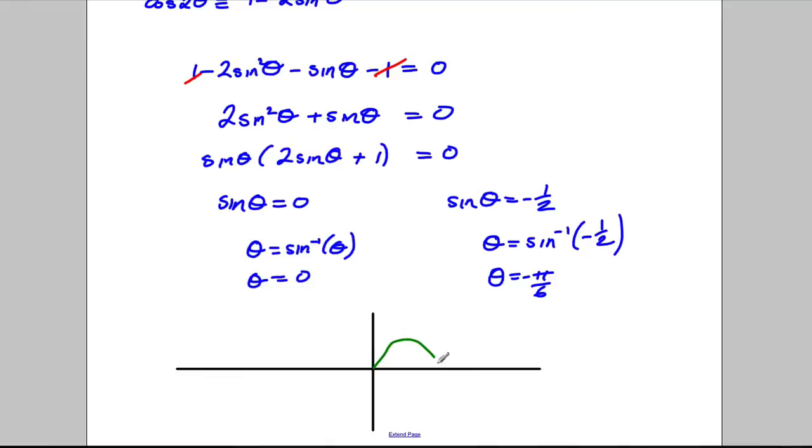Sine looks like this. And we're only looking between negative pi and pi. So we only care between here and here. Theta is 0. There'll be an answer here, here and here.